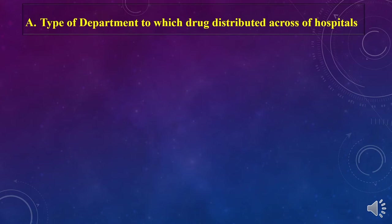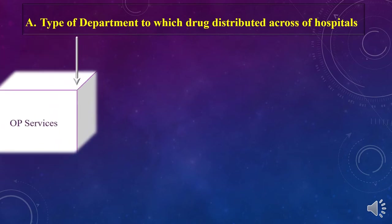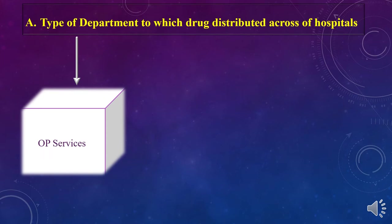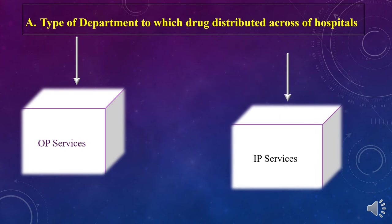Regarding the type of department to which a drug is distributed across the hospital, the first department is the OP pharmacy or outpatient services, and the second department is the IP pharmacy — that is, the inpatient pharmacy. These are the two important departments where we need to distribute drugs across the hospital.